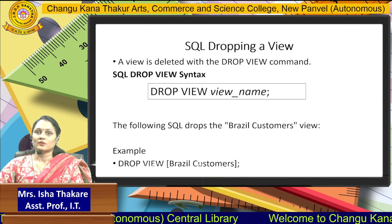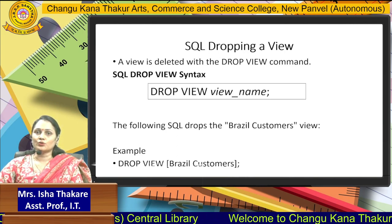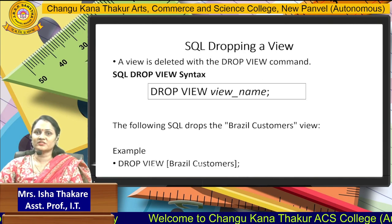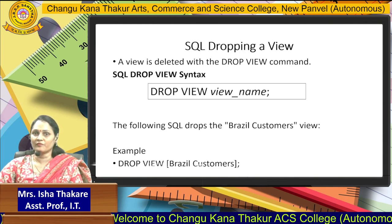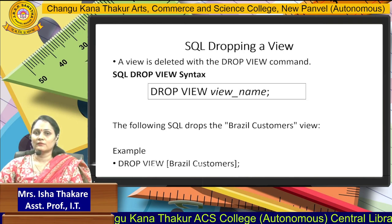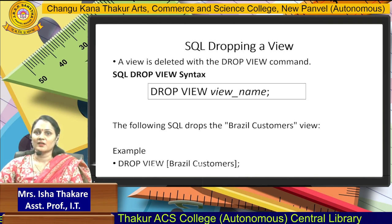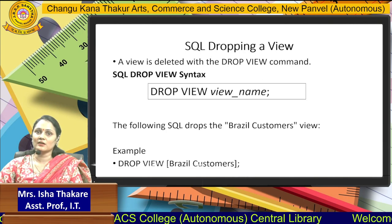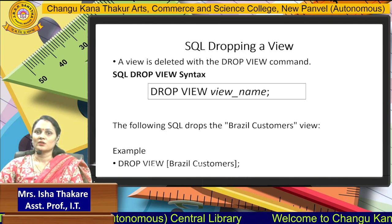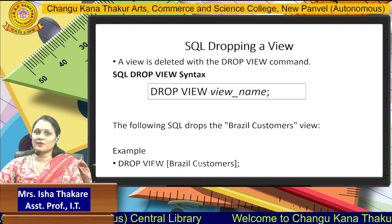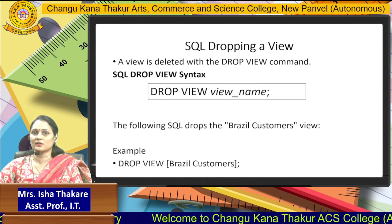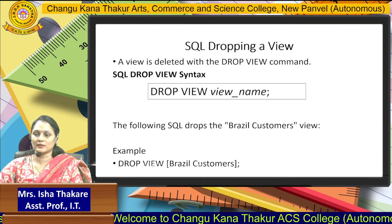To drop a view, we use the DDL command DROP VIEW followed by the view name. The example provided here is: DROP VIEW Brazil_customers.